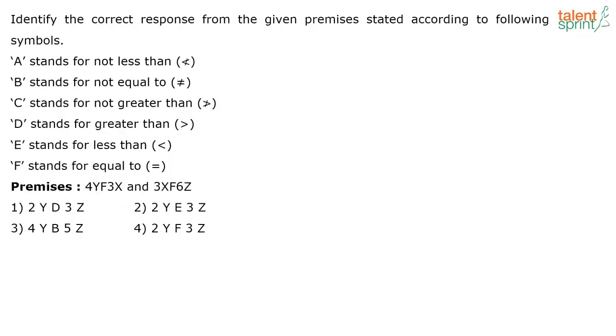Identify the correct response from the given premises stated according to the following symbols. Actually the question is very easy. See what is given here? First thing, when you see this question, what will you think? They have given what A, B, C, D, E, and F stand for, and here they have given X and Y. So suddenly you might feel what are they trying to say? X and Y here are just variables.